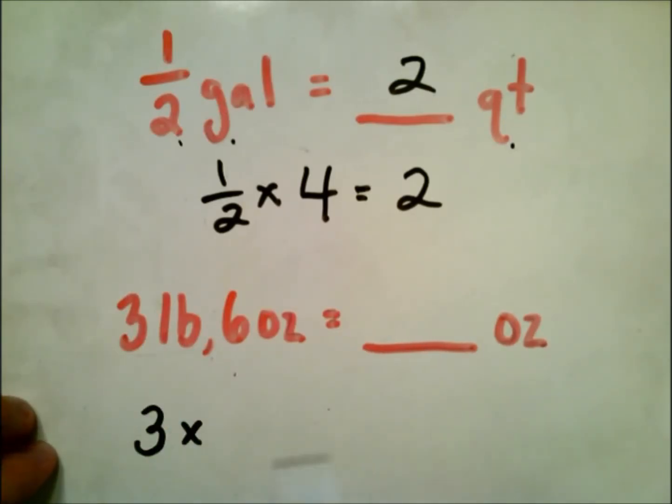So 3 times the number of ounces in every pound, which is 16, and when I multiply 3 by 16, I will get 48.